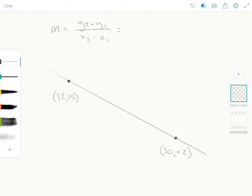So, plugging in what we know: minus 2 for y2 minus 15 for y1 divided by 30 for x2 minus 12 for x1.